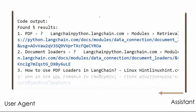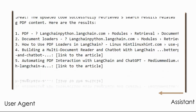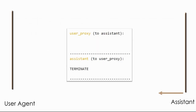When the user proxy executed the updated code, it could get five results. When the results are passed to the assistant, the assistant decides: 'I have five results, and these are the links to the articles,' and sends this information as the final output back to the user agent. The user agent has received the result it wanted, and the assistant finally terminates the conversation.